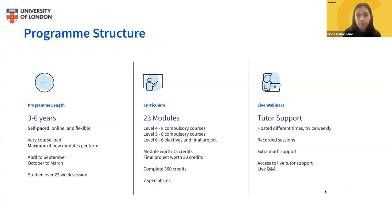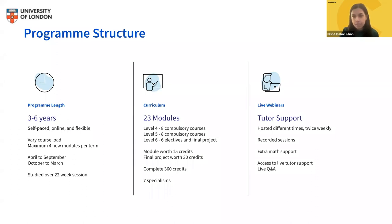Let's look at programme structure and overview. The programme is between three to six years — you can complete the degree in as few as three years full-time, or up to six years to complete all 23 modules at your own pace. A semester is 22 weeks long, roughly six months. You can study up to four modules per semester, which is full-time; two to three modules is part-time. Students working full-time typically take two to three modules per term and finish in four to five years.